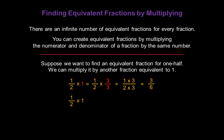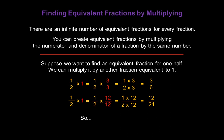Let's find another fraction equivalent to one half. This time, let's take one half and multiply top and bottom by twelve over twelve. Our new numerator becomes one times twelve, and the denominator becomes two times twelve. One times twelve is twelve, and two times twelve is twenty-four. So we now know that one half is equivalent to three over six, which is also equivalent to twelve over twenty-four. All three fractions are equivalent to each other.